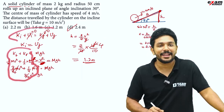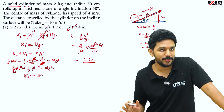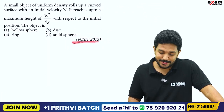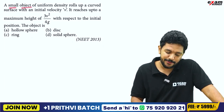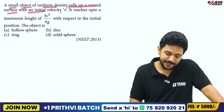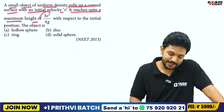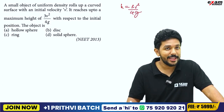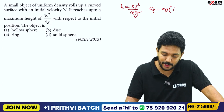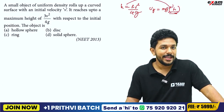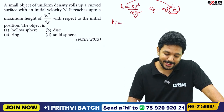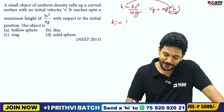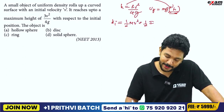This is a golden question to try yourself. In 2013, a small object of uniform density rolls up a curved surface with an initial velocity v. It reaches a maximum height of 3v squared by 4g with respect to the initial position. Using conservation of energy: final potential energy equals mgh equals mg times 3v²/4g. Set this equal to the initial total kinetic energy: half mv squared plus half I times v squared by r squared, and solve for I.